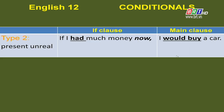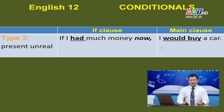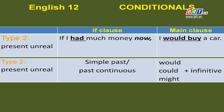Type 2 conditional. We use the Type 2 conditional to talk about things that are not real in the present. Again, pay attention to the verb forms in both clauses. In the if-clause, the verb is in the simple past tense. In the main clause, the form is 'would + infinitive.' In some cases, the if-clause verb may be in the past continuous. For the main clause, 'would' can be replaced by 'could' or 'might.'